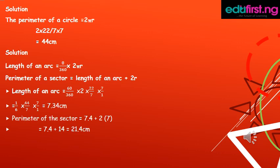Perimeter of the sector equals 7.34 plus 2 times 7 is equal to 7.4 plus 14 equals 21.4 cm.